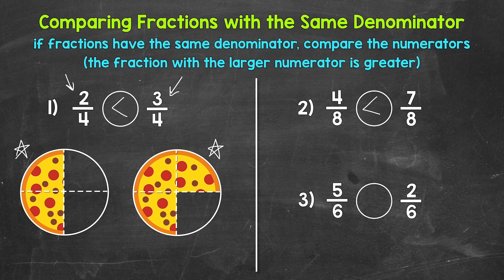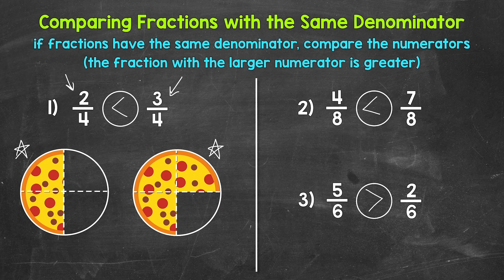Lastly, let's move on to number three where we have five-sixths and two-sixths. Reading from left to right: five-sixths is greater than, less than, or equal to two-sixths. If we have the same sized whole divided into six equal pieces, which is greater — five out of six total pieces or two out of six total pieces? We have the same denominator, so we can just compare the numerators. Five is greater than two, so five-sixths is greater. Our symbol opens up towards five-sixths, and we read this as five-sixths is greater than two-sixths. That's how to compare fractions with the same denominator.